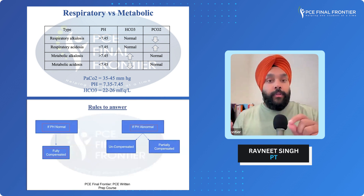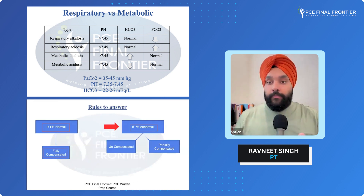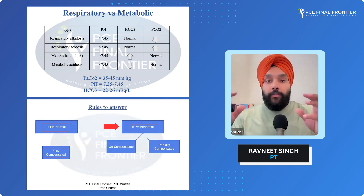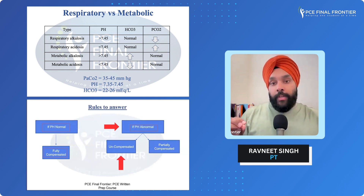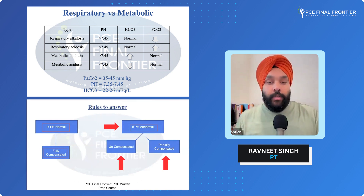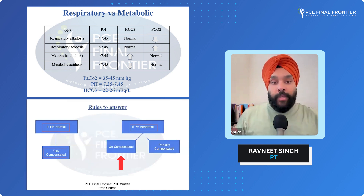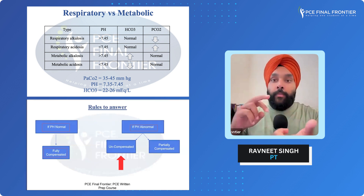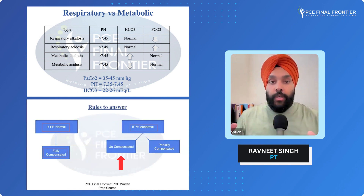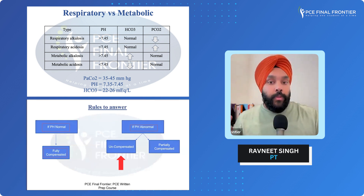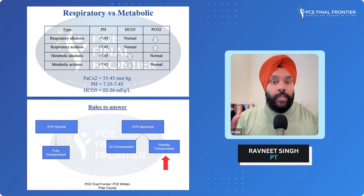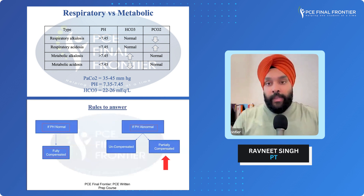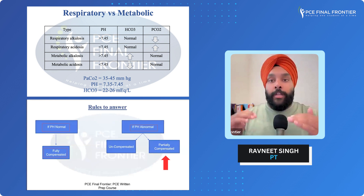If pH is not normal — either reduced or increased — it's either uncompensated or partially compensated. Uncompensated means none of the values, carbon dioxide or bicarbonate, changed and the pH is abnormal. Partially compensated means some changes were seen in carbon dioxide or bicarbonate or both, but pH is still not in the normal limits.